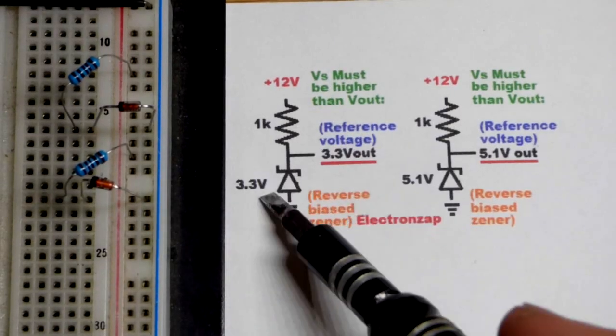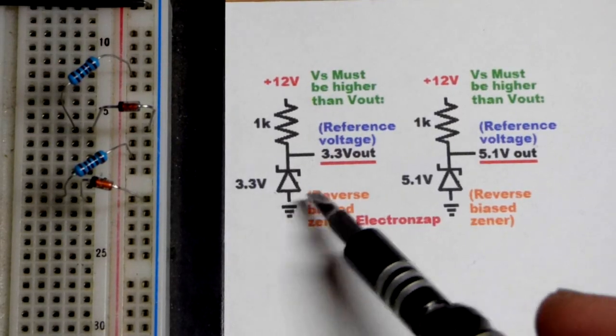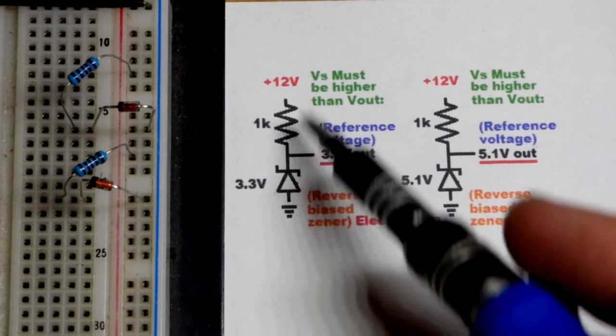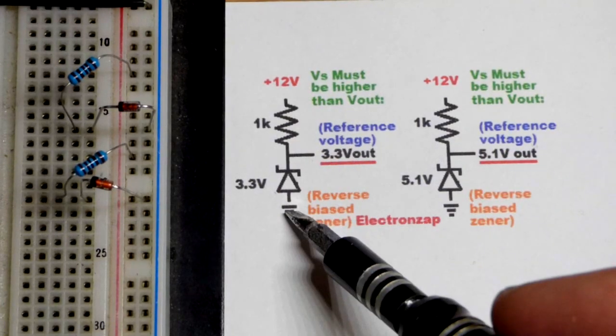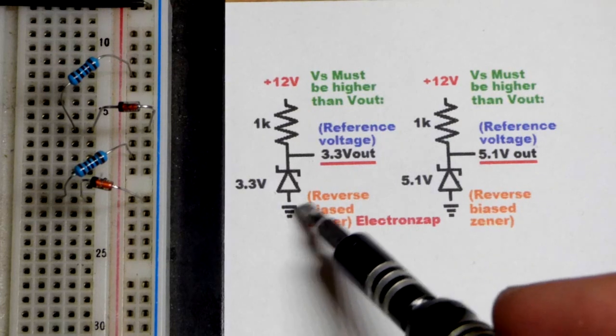Now in this video we're going to take a quick look at the basic Zener diode voltage regulator. That's usually when you have a resistor to the positive supply and then the Zener diode reverse biased connected to the negative supply.